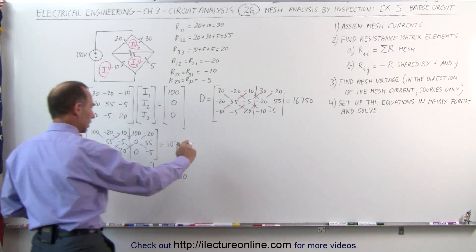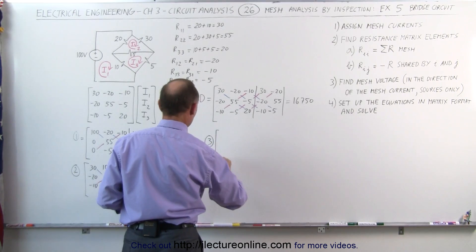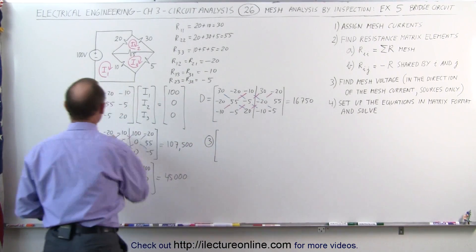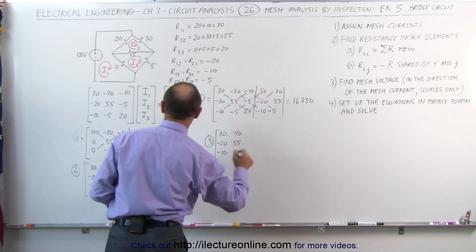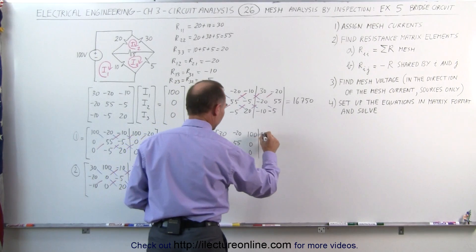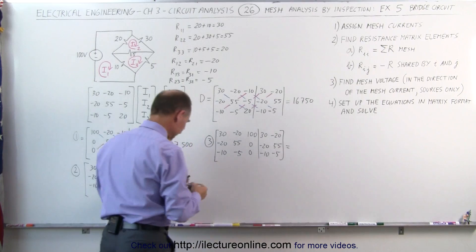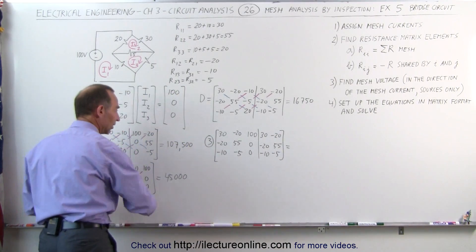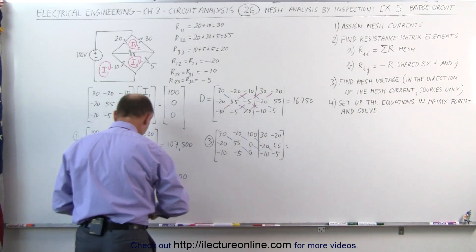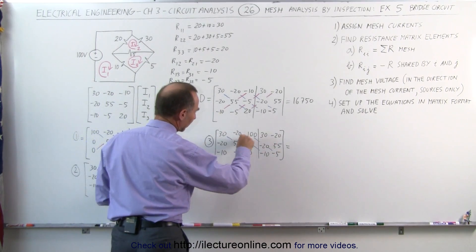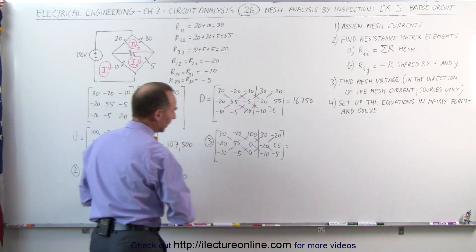And finally, since I'm out of room here, I move over here. Matrix number 3 for I3. Again, we repeat these columns. 30, minus 20, minus 10, minus 20, 55, minus 5, 100, 0, 0. And then repeat the first two columns. 30, minus 10, minus 20, minus 5. Again, I like to guide myself using these colors. I multiply these elements together, add them together, and I subtract when I multiply these elements together in this diagonal. Still playing the zeros to cancel out, which is always good.